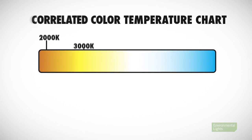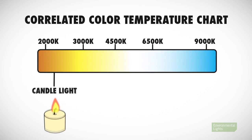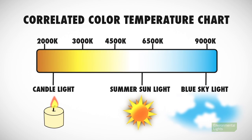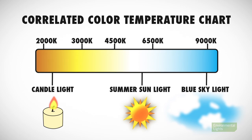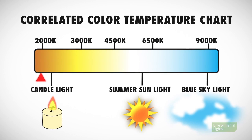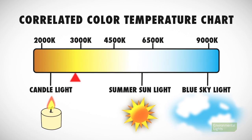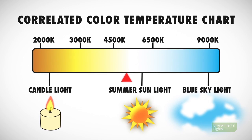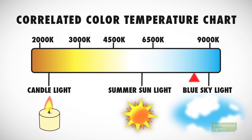CCT is expressed in Kelvin and means that a black body heated to that temperature would emit that specific color of light. As a black body gets hotter, the light it emits changes from red to orange to yellow to white to blue.